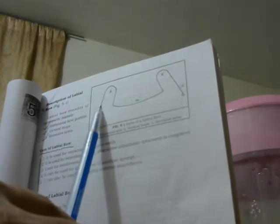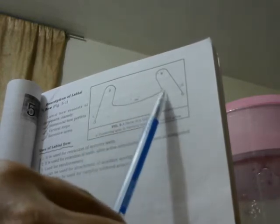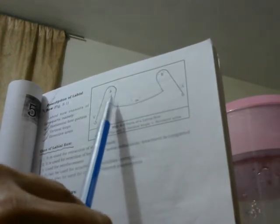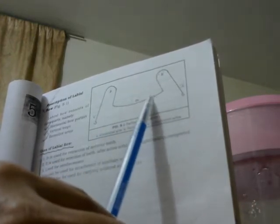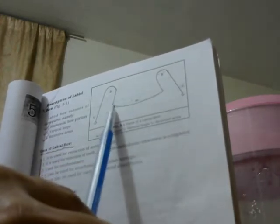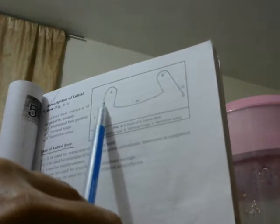One is here and another is here. And the another part is the retentive arm of the bow. Retentive arm is also placed on both sides of the vertical loaf of the labial bow.